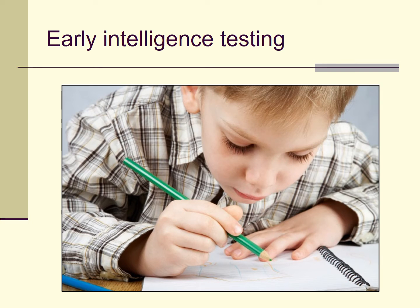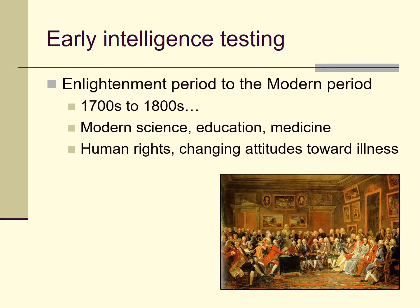Let's go back to early intelligence testing. Although I'll focus mostly on the United States, our story picks up in Europe. The time period is the 1700s into the 1800s, commonly referred to as the Enlightenment or early modern period — a stretch in history focused on advancements in science, education, medicine, philosophy, attitudes toward illness, human rights, and the rights of women and minorities. An element of that is the changing attitudes toward mental disabilities, particularly developmental and intellectual disabilities like mental retardation.